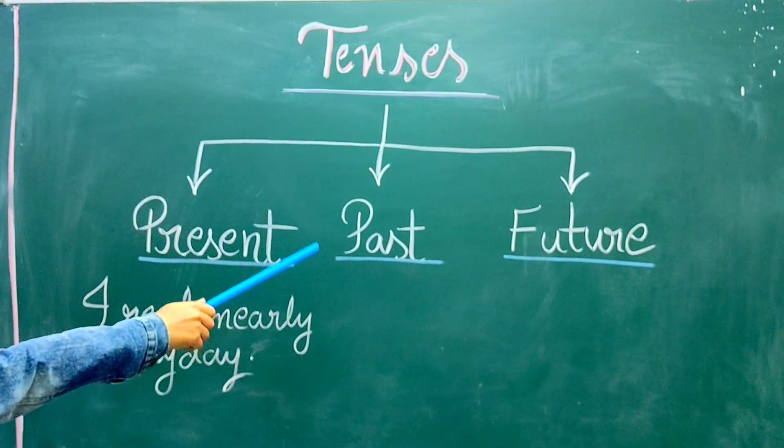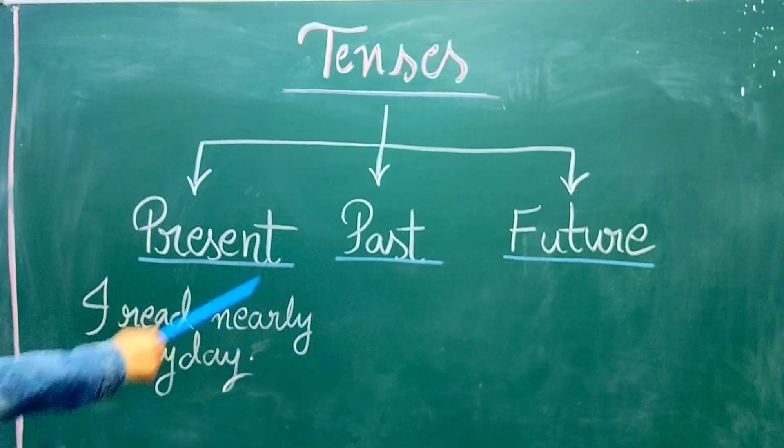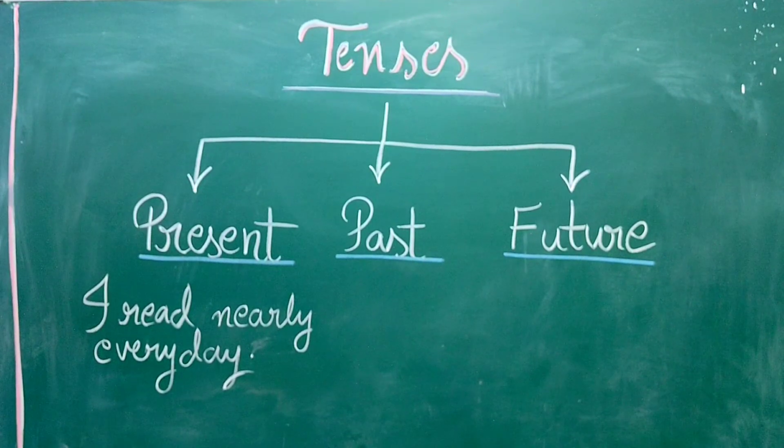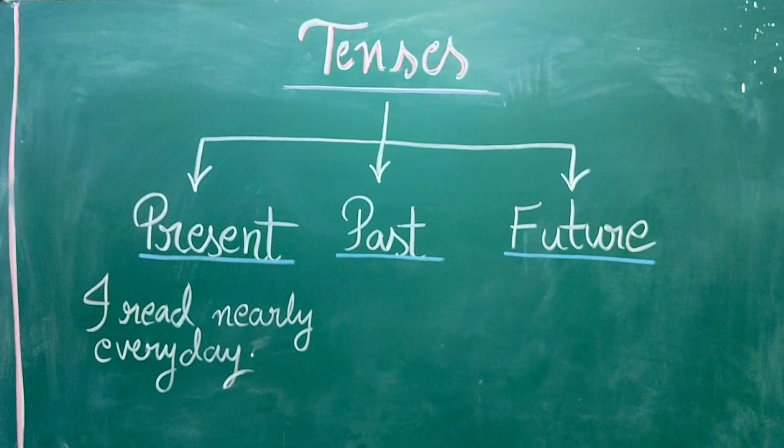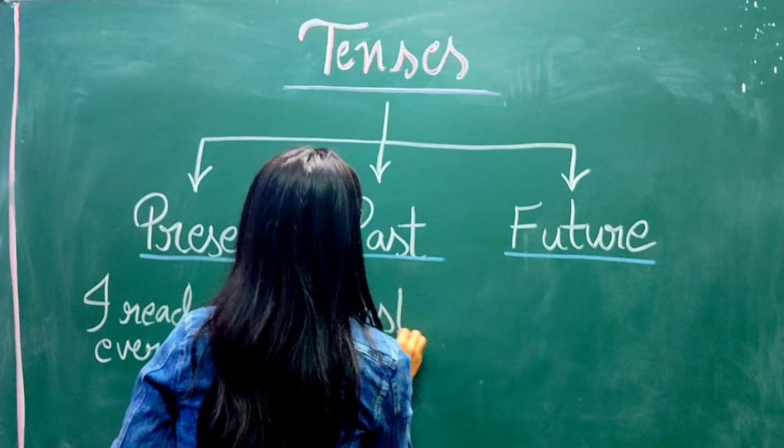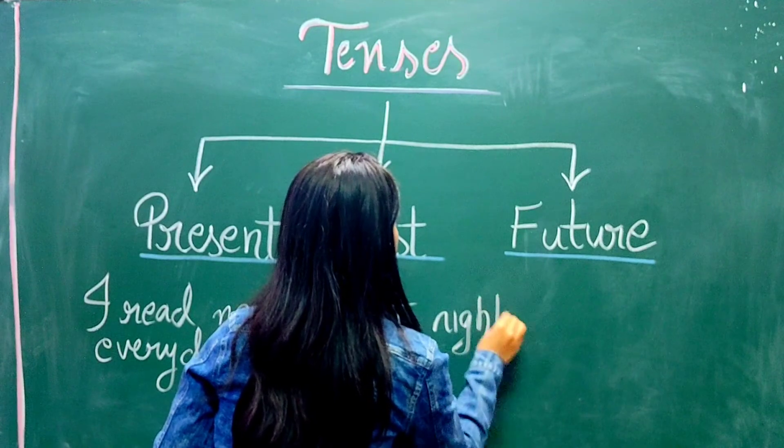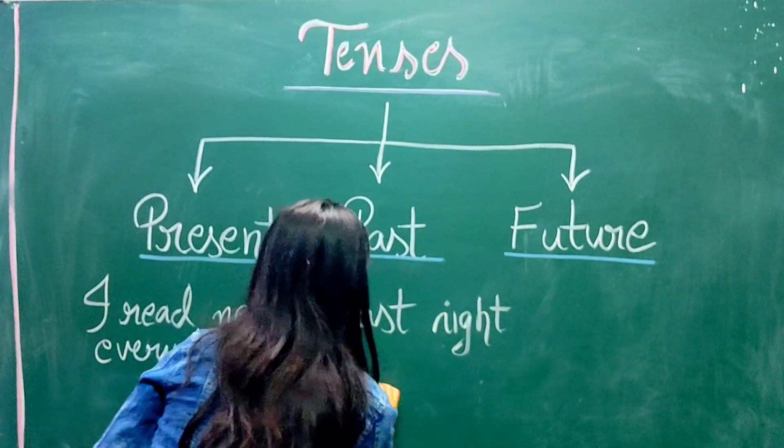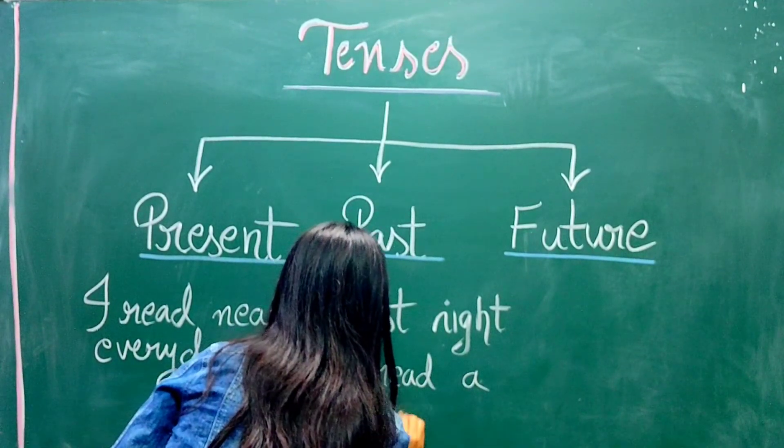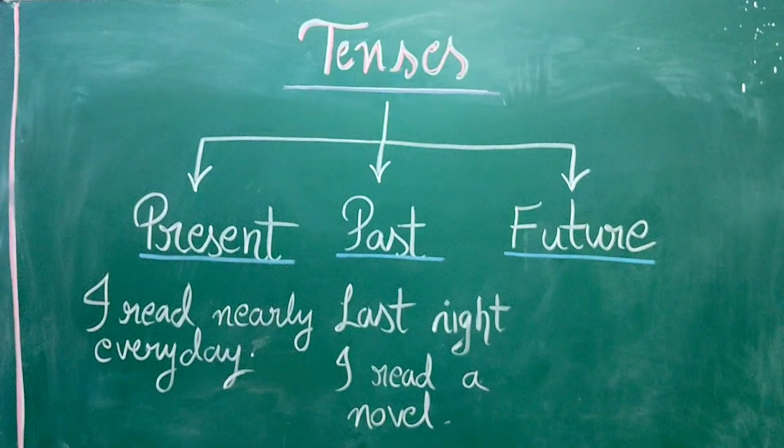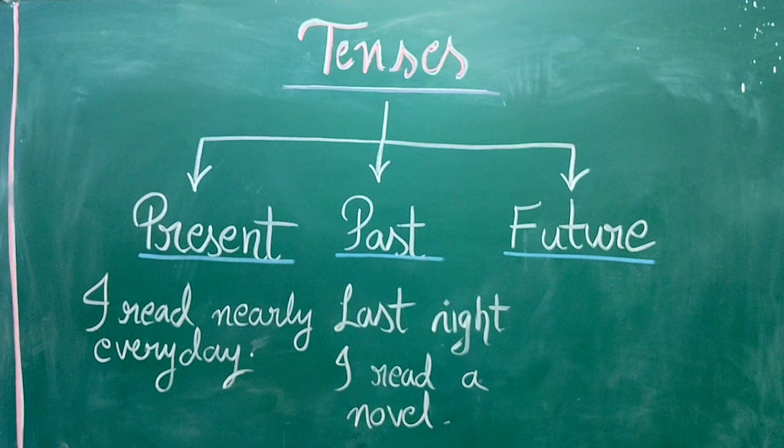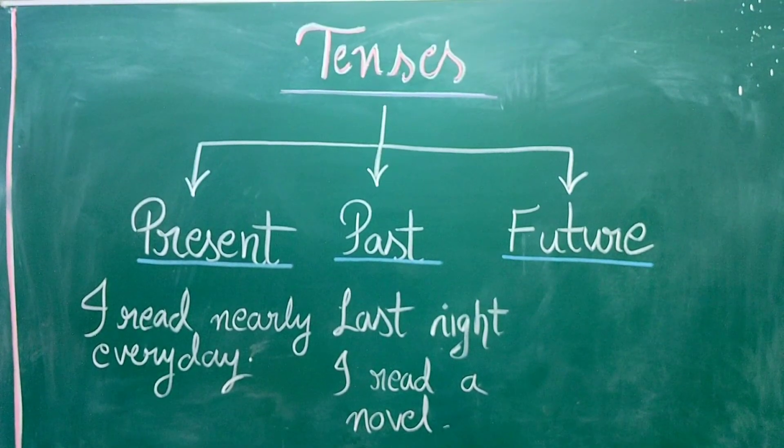Now, the past tense is used to describe things that have already happened. For example, earlier in the day, yesterday, last week, four years ago. So these are included under past tense. For example, last night, I read a novel. Last night, I read a novel. So this will come under past tense. Because here we are talking about last night. That is, yesterday.